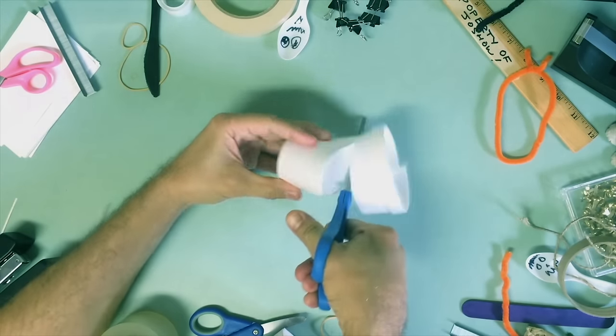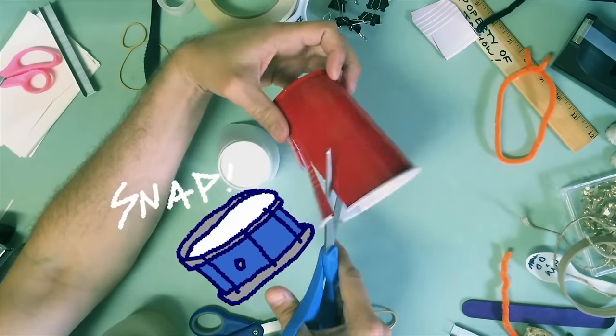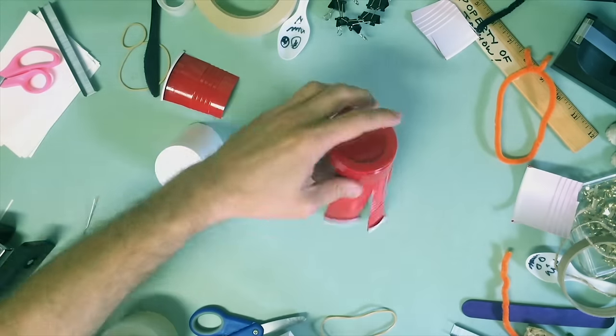Grab a cup and we're going to cut this one down. This will be our snap drum. And now this one, let's give this one legs. This will be our floor boom.